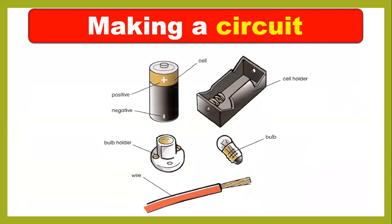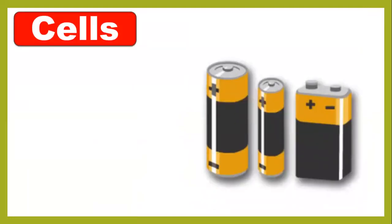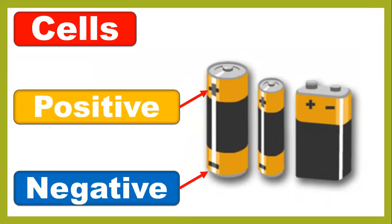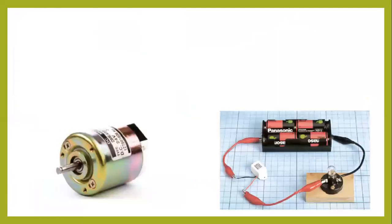Today we are also revising cells. In the previous class we learned about the positive terminal and the negative terminal of a cell. There are many kinds of batteries in the market — they have different shapes but they work the same way, and they have different powers.